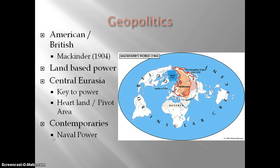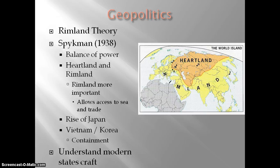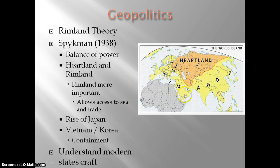Nicholas Spikman develops what's called the Rimland Theory in 1938. He takes Mackinder's theory and goes a different route — basically saying the heartland isn't necessarily as important. He sees some benefits of the heartland, but the Rimland is more significant. If one controlled both the heartland and the Rimland, that state could dominate the world. The Rimland matters not just for the amount of land and resources, but because it allows access to the sea and trade, which he believes allows a state to develop economically much more quickly than the heartland.